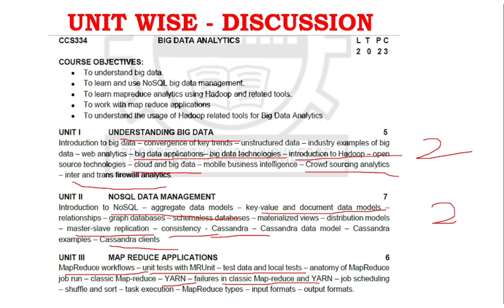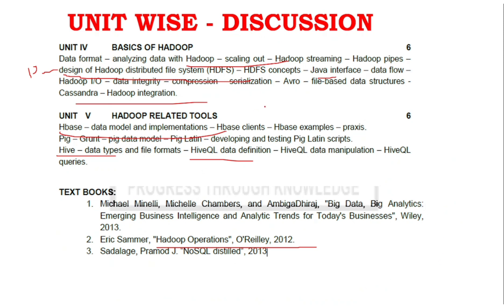For Unit 3 Part A: anatomy of MapReduce, input and output formats, task execution, shuffle and sort. For Unit 4 Part A: AVRO, data formats, analyzing data with Hadoop, scaling out, data integrity, compression, and serialization are all important Part A areas.